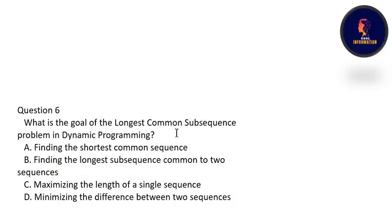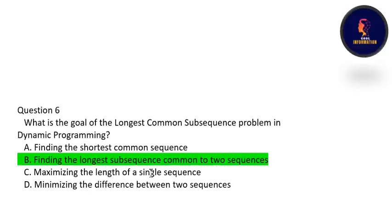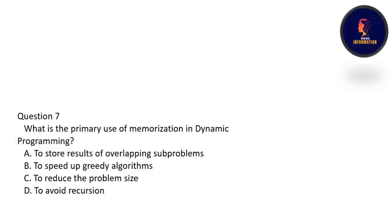Next: what is the goal of the longest common subsequence problem in DP? The goal is finding the longest subsequence common to two sequences — option B is correct. And what is the primary use of memoization in dynamic programming? The primary use is to store the results of overlapping subproblems. Option A is correct.